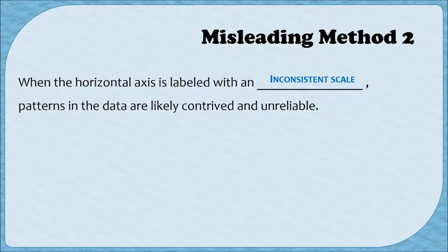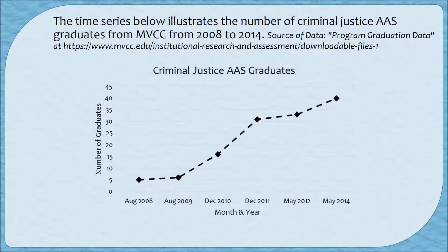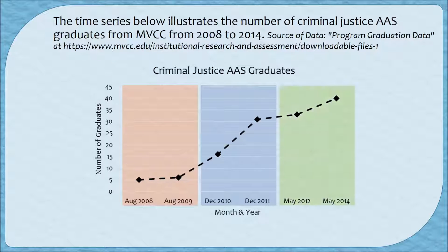Let's look at an example using MVCC data. The time series below illustrates the number of criminal justice AAS graduates from MVCC from 2008 to 2014, pulled from data on the MVCC website. Looking at this graph, on the bottom we have months and years going from 2008 to 2014, and we can see this graph is steadily rising, showing more and more criminal justice graduates. However, I created this graph and was a little sneaky — the first two data points are from August, the next two from December, and the last two from May.